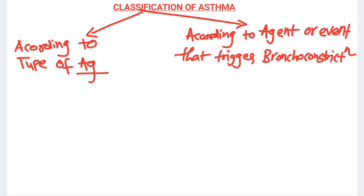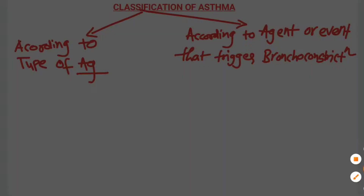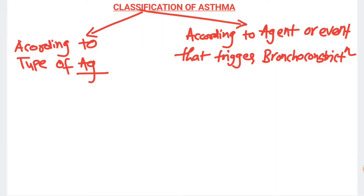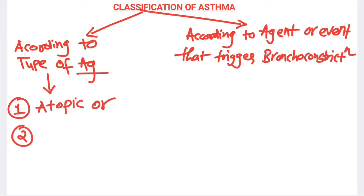According to the type of antigen leading to asthma, it is divided into two classifications: one is atopic asthma and the second is non-atopic asthma. Atopic asthma is also known as extrinsic asthma, while non-atopic asthma is known as intrinsic asthma.